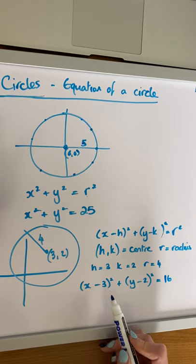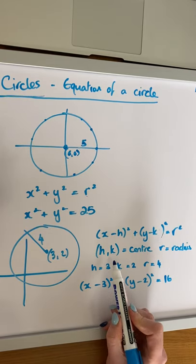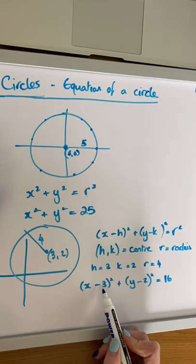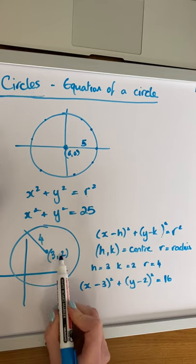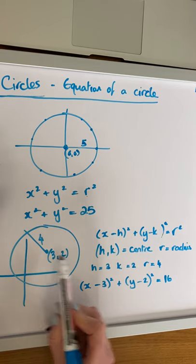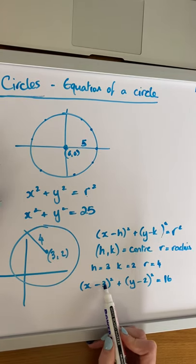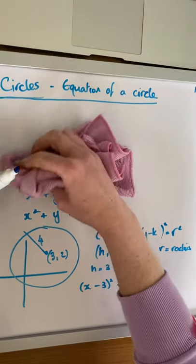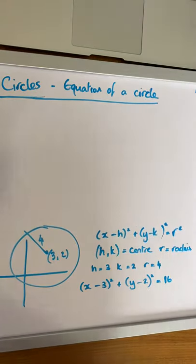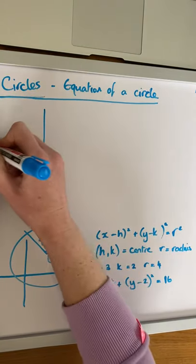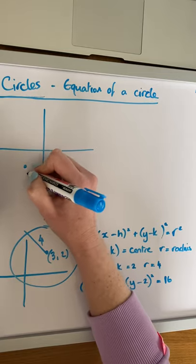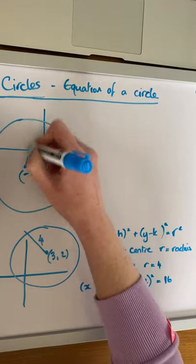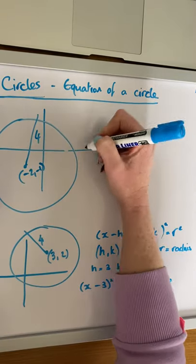A quick trick to remember: when we are transferring the center of a circle into the equation of this format, all we do is change the sign of the coordinate of the center. So if our coordinates of the center are (3, 2), in the formula it will be minus 3 and minus 2 inside the brackets. So what we have to be careful of is where we have a circle with a center in a negative quadrant.